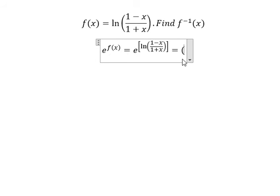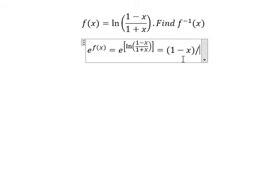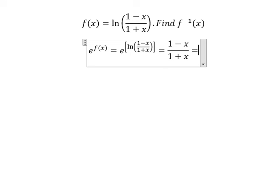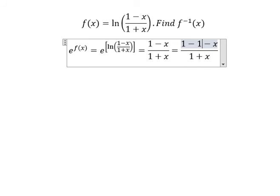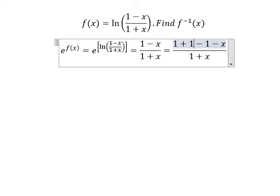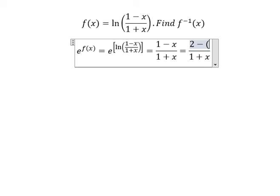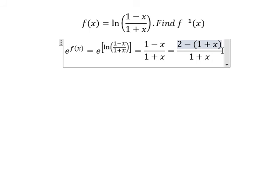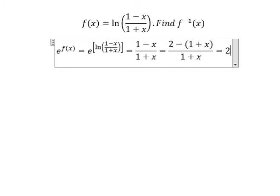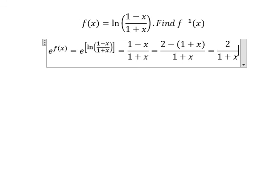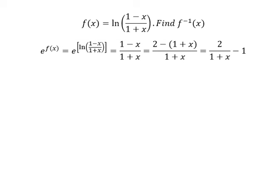So we got about 1 minus x over 1 plus x. Next, about 1 minus x, we need to put negative number 1, that means we need to put about positive number 1. 1 plus 1 is about 2, negative number 1 negative x, and we got about 2 over 1 plus x minus number 1. We put negative number 1 go to the left.